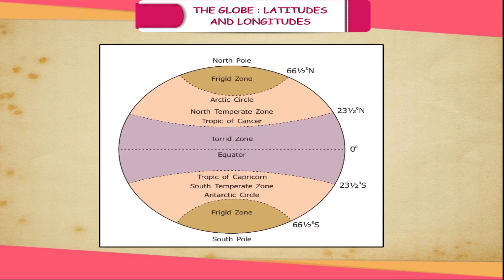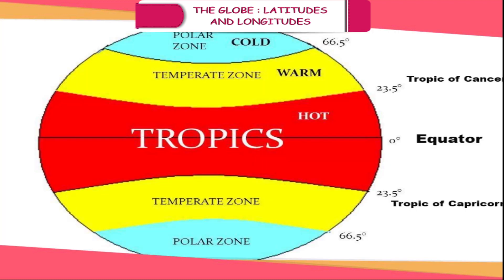Heat zones: The parallels divide the Earth into various heat zones. Different zones have different types of vegetation and climate; they are therefore called climatic zones or heat zones. There are three main heat zones.